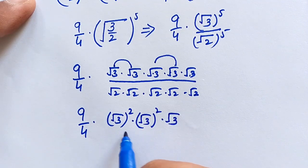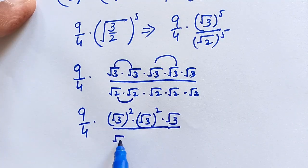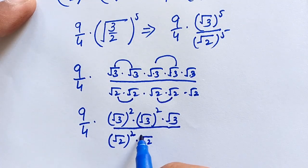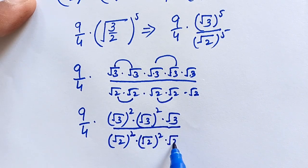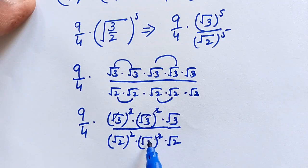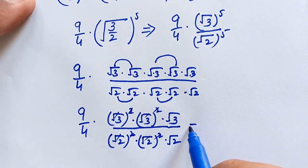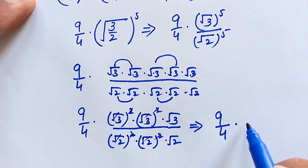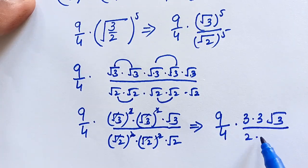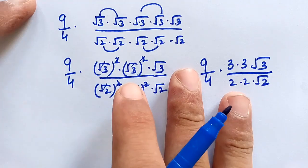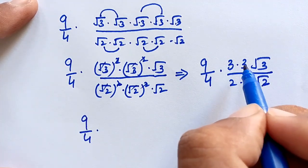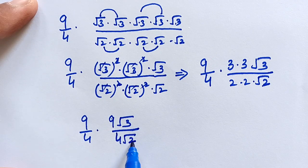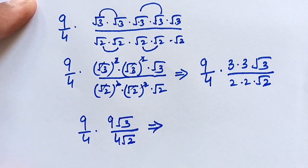For the denominator: √2 × √2 = √2², and √2 × √2 = √2², with one √2 remaining. The squares cancel with the square roots — each √2² = 2 and each √3² = 3. So we get 9 over 4 times 3 × 3 × √3 over 2 × 2 × √2. That gives 9 over 4 times 9√3 over 4√2.